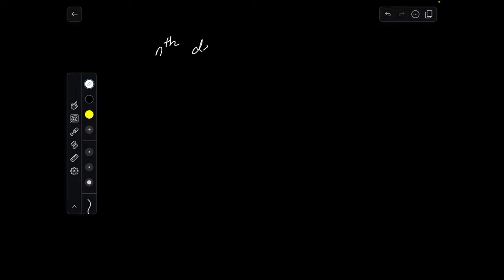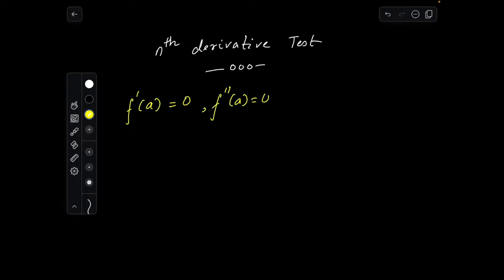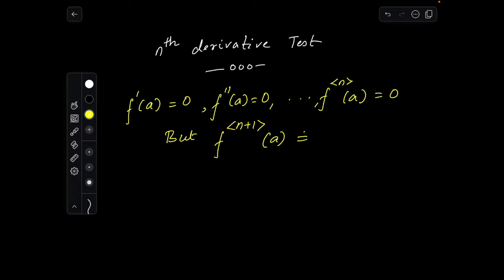In this video we are going to discuss the nth derivative test and its proof. This test is used to figure out whether a point x equal to a, where the derivative of the function vanishes, is a point of local maxima, a point of local minima, or neither of the two.